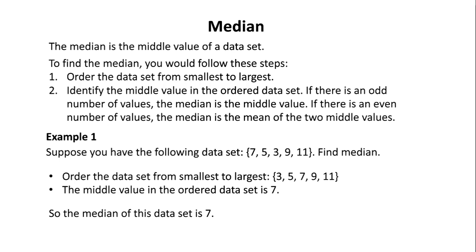Example 1: Suppose you have the following data set: 7, 5, 3, 9, 11. Find median. Order the data set from smallest to largest: 3, 5, 7, 9, 11. The middle value in the ordered data set is 7. So the median of this data set is 7.